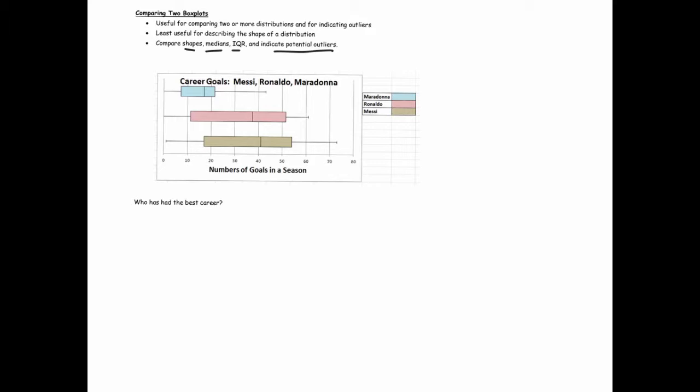So I have this data I got from Wikipedia on three very famous soccer players. And I think I'm going to ignore Maradona. Maradona is the top one. I'm just going to see if I can compare Ronaldo with Messi. So the overall question is who has had the best career so far. So again, let's just compare, talk about their shapes, and then their medians and their IQRs, and see what we can come up with in terms of a conclusion here.